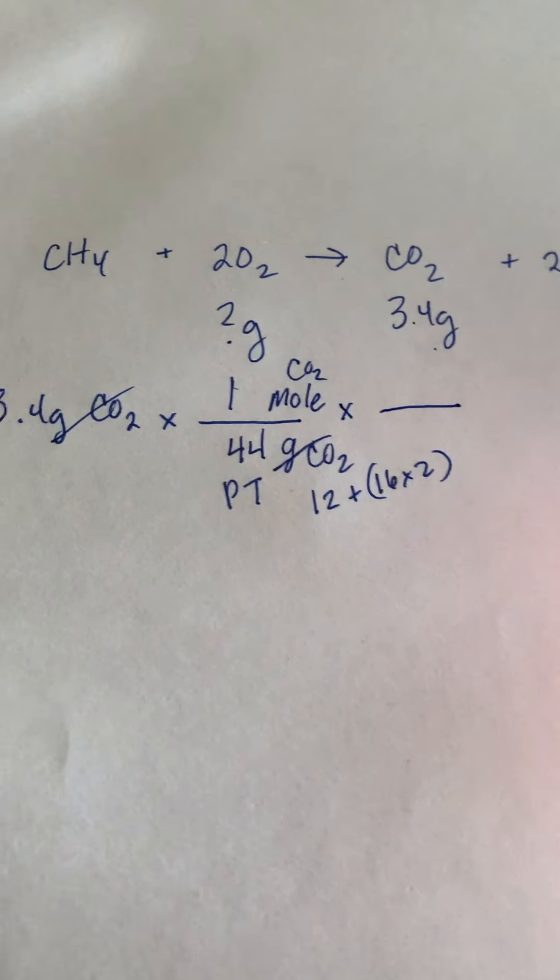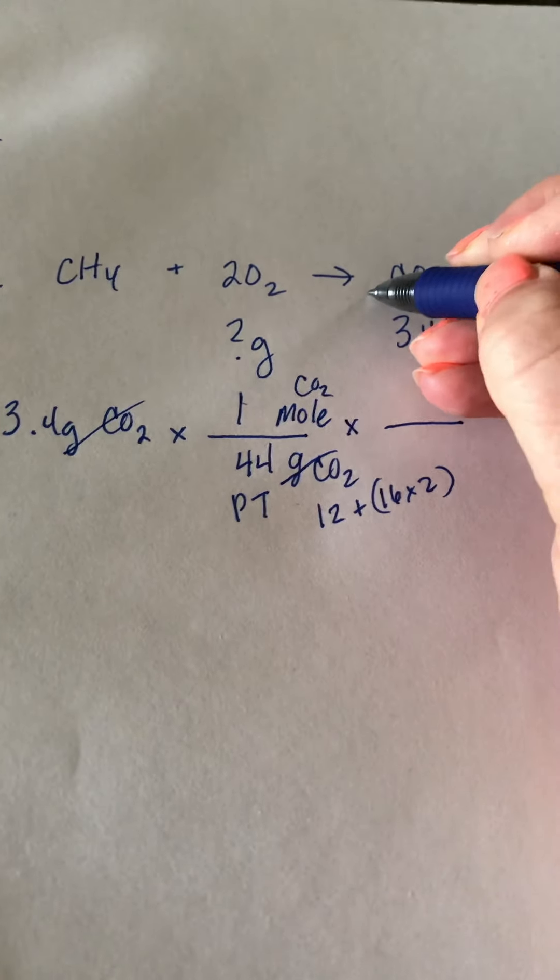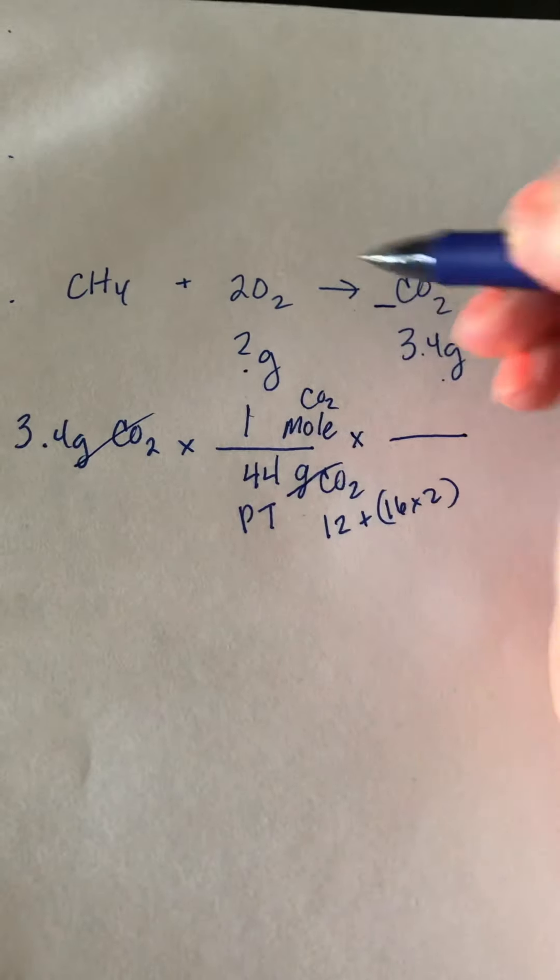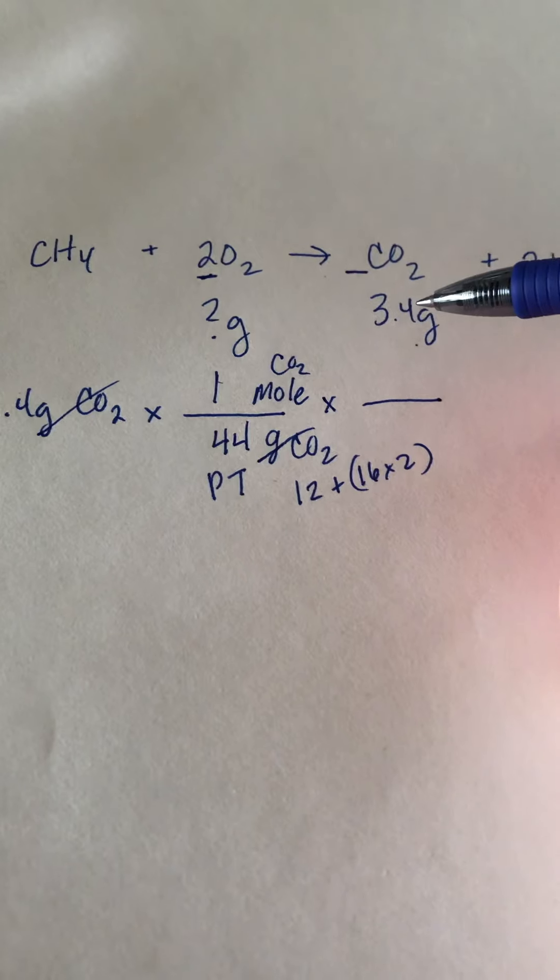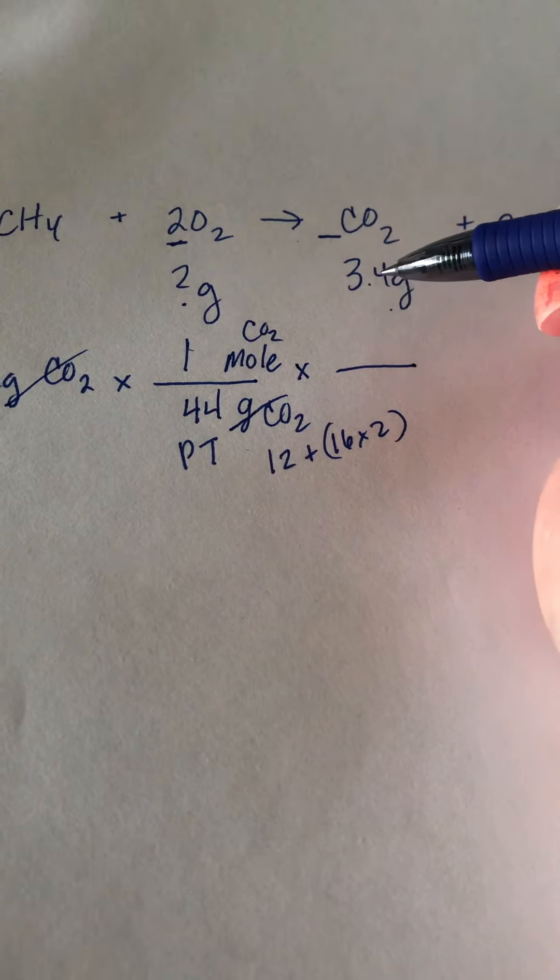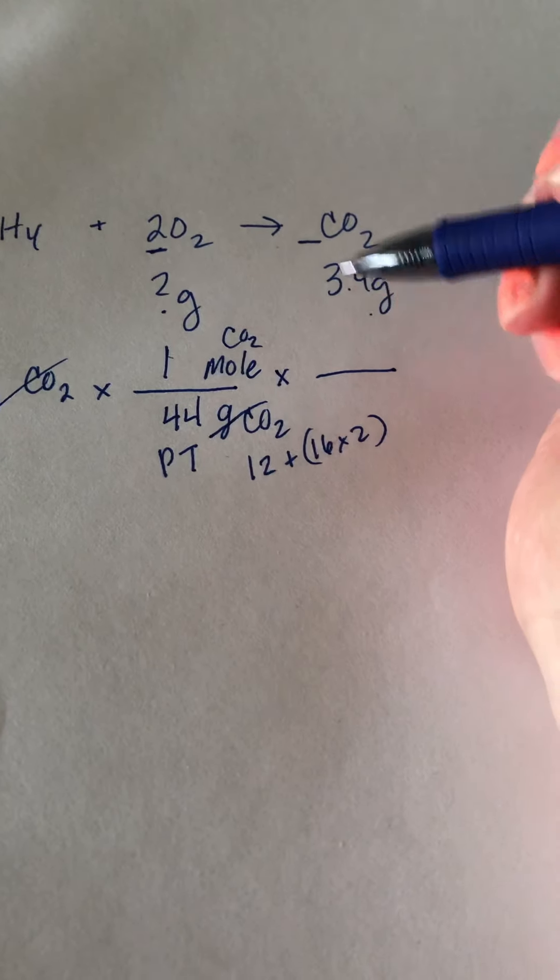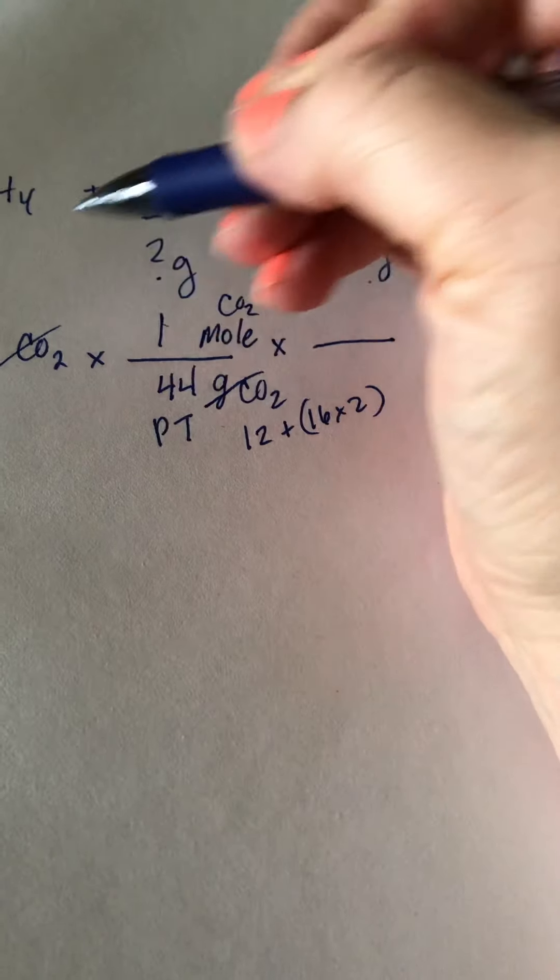So when you have moles, then you can do the molar ratio, that is the coefficients. There's nothing in front of carbon dioxide, so it's one, and there's two in front of oxygen, so it's a one to two ratio. It's just like last week when you looked at s'mores, like between graham crackers and chocolate, it's a two to one ratio.